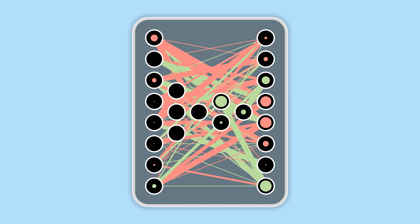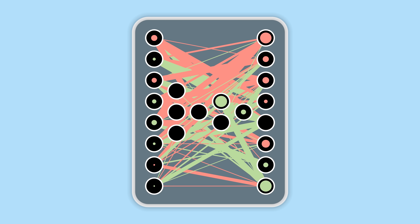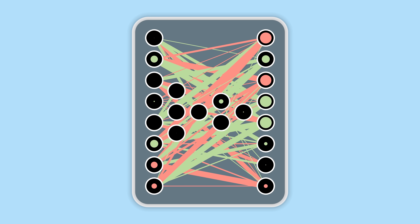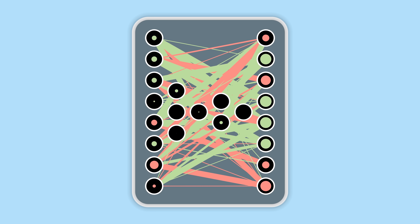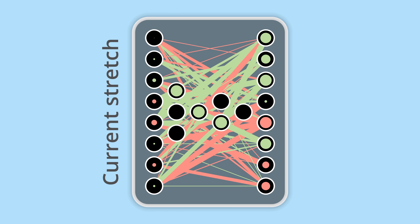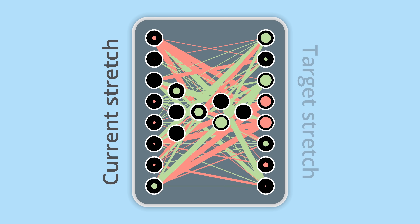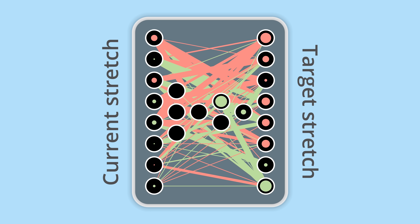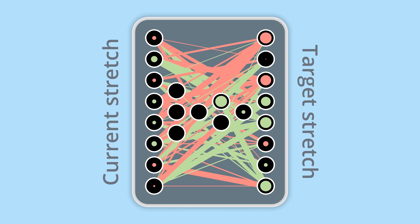A neural network then controls these muscles to enable the agent's movement. In this initial version, the inputs represent each muscle's current stretch level, and the outputs specify the target stretch for each muscle. Hidden layer neurons and their connections emerge spontaneously during training.